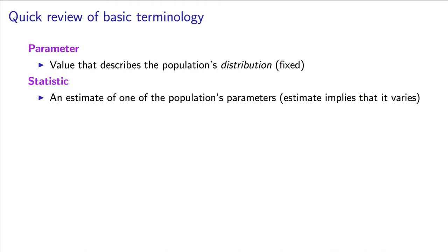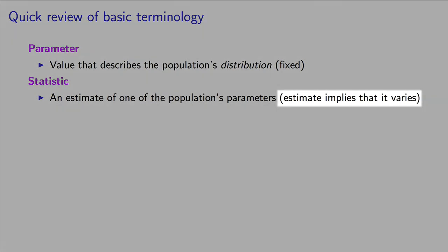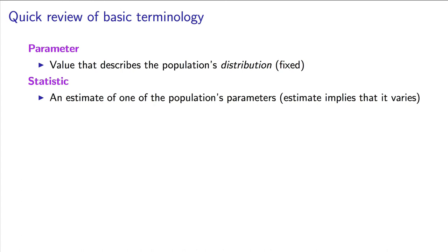The true average, the parameter, is fixed but unknown to us. The estimated average, the statistic, is an estimate of the unknown parameter. If I went back to my data set and randomly selected a different set of 8,760 boards from last year, I'll get a different average, a different statistic. The parameter has not changed.